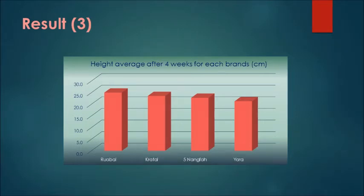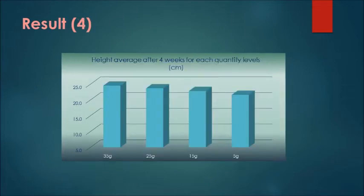This graph shows the height average after 4 weeks for each brand. The best brand is Rebuy, second is Ka Tai, third is 5 Nang Fa, and fourth is Yala. This graph shows the height average after 4 weeks for each quantity level. The best is 35 grams, second is 25 grams, third is 15 grams, and fourth is 5 grams.